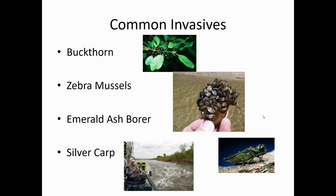Here are some very common invasive species in Minnesota right now. Buckthorn is a big one. Zebra mussels — if you want to clean the lake up, throw some zebra mussels in, but it's terrible, because everything will get eaten. Emerald ash borer. And then the silver carp — the jumping carp — they're kind of coming up and people are really watching that one now.